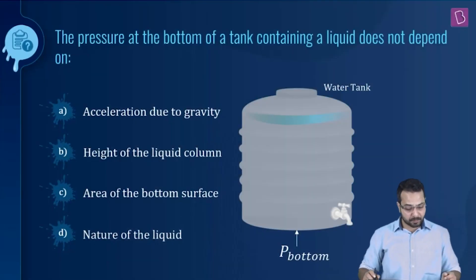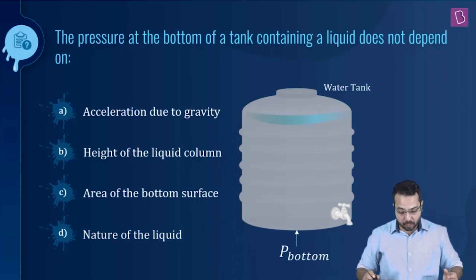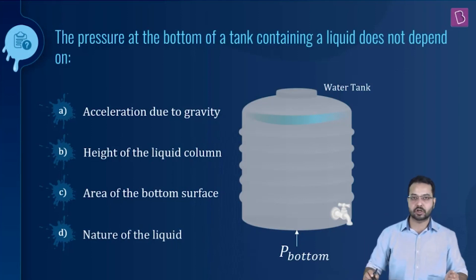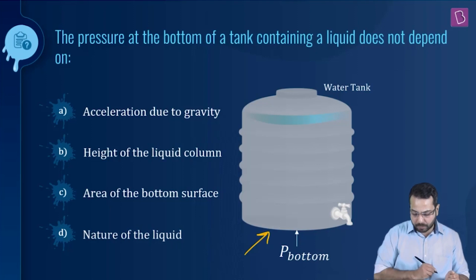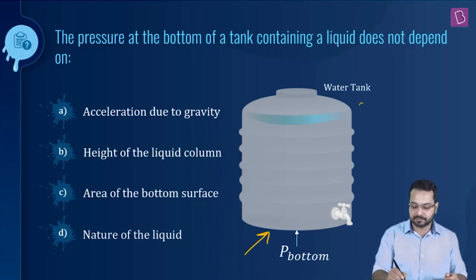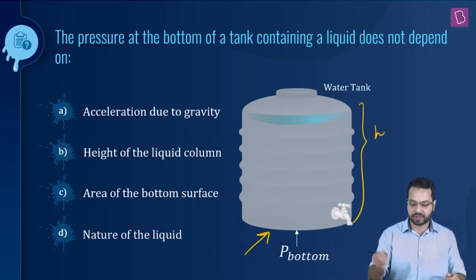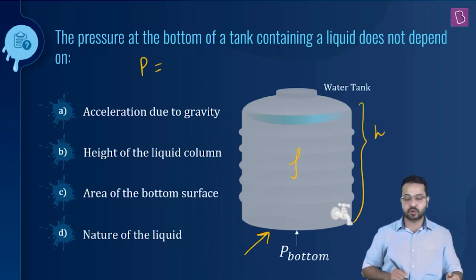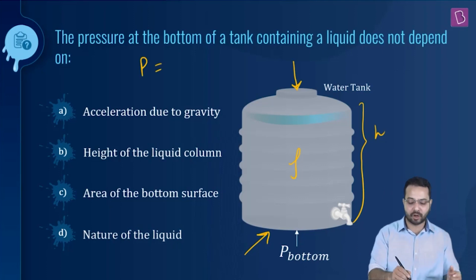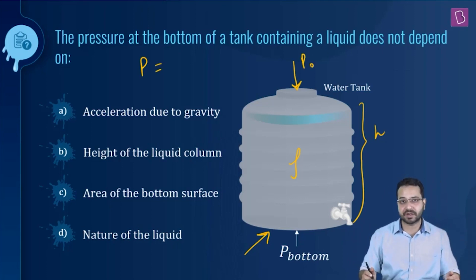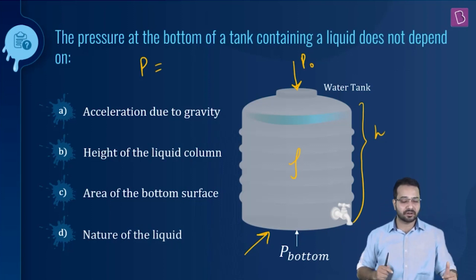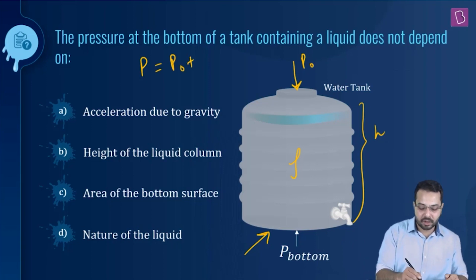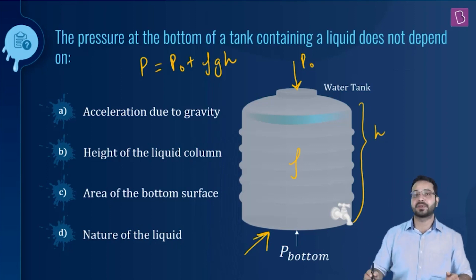The question is: the pressure at the bottom of a tank containing a liquid does not depend on — acceleration due to gravity, height of the liquid column, area of the bottom surface, or nature of the liquid? We consider a liquid column of height h and density ρ. The pressure at the bottom is P₀ + ρgh, where P₀ is the pressure at the top of the column.